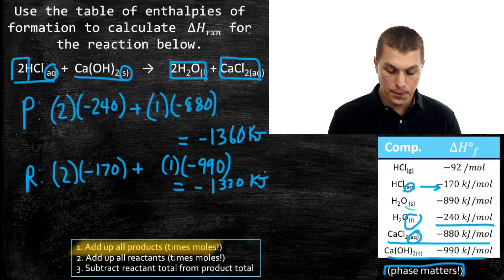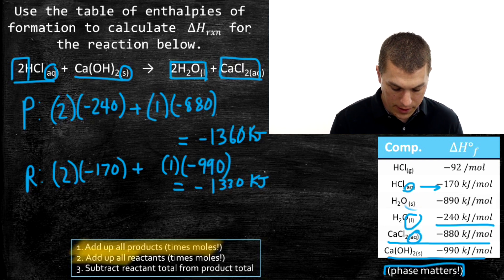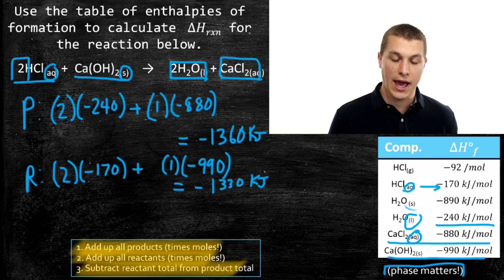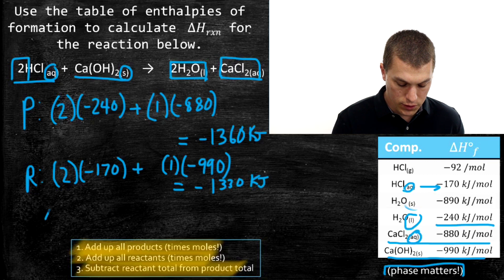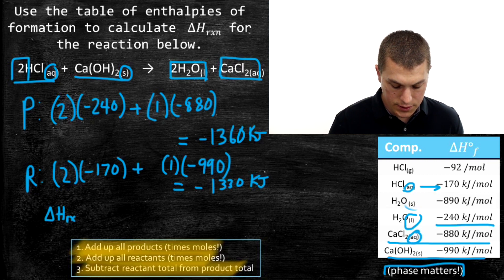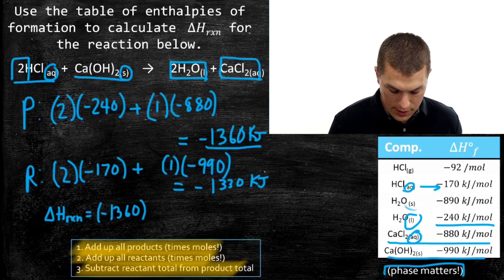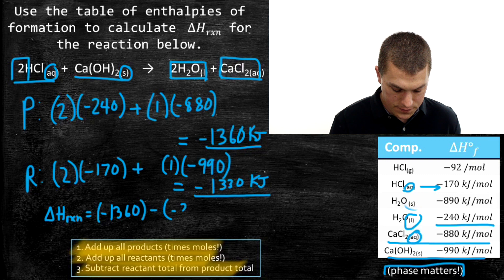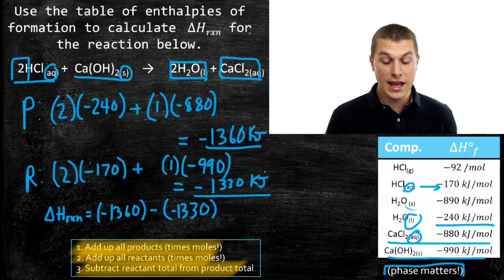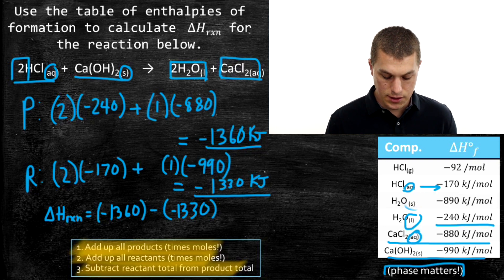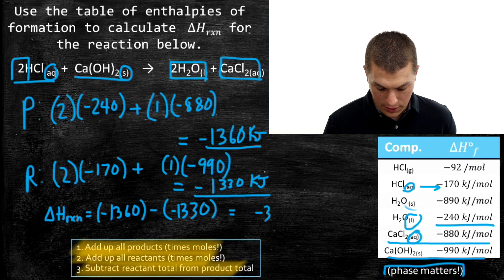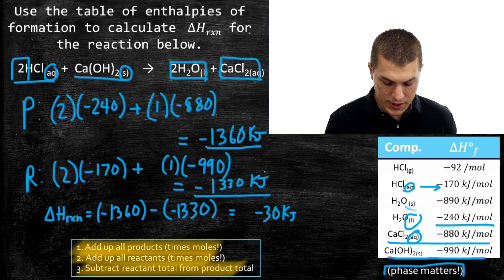Now that I've calculated the enthalpy of formation for products and reactants, I just subtract. Delta H of reaction equals products minus reactants: negative 1360 minus negative 1330. Make sure you keep track of those signs carefully. That gives negative 30 kilojoules — that's the delta H of reaction.